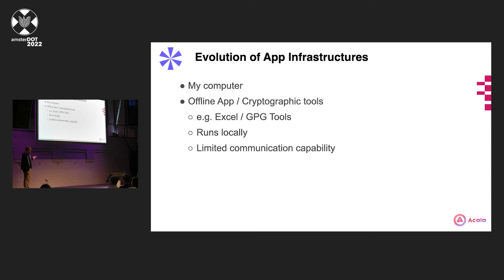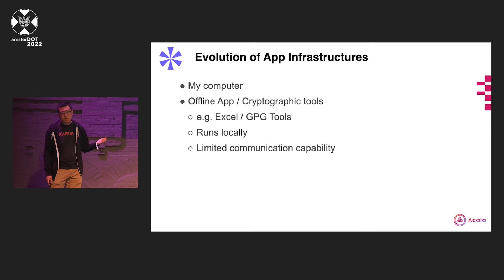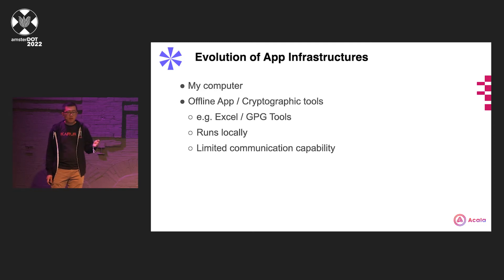It all begins with this great innovation called the computer. Initially, we just have a computer and you have applications like Excel, for example. They are super useful, you can do a lot of things with that. But with things on a local computer, that is very limited. Then, in the pre-blockchain era, we have a bunch of cryptographic tools. You can do authentication, authorization, signing, encryption. They are super useful and can achieve a lot of things that simply cannot be done without those tools. But still, it's somewhat limited. There are a lot of things that cannot be done with them.